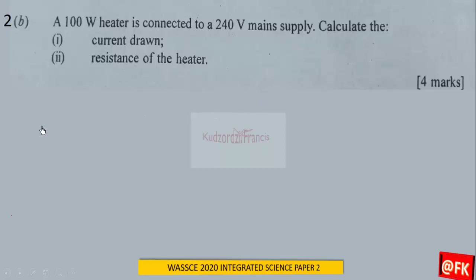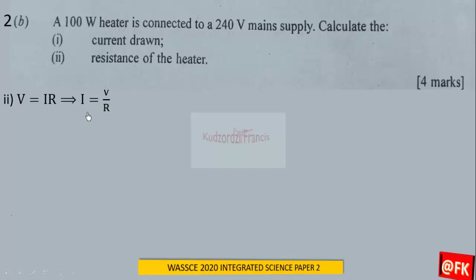From Ohm's law, V = IR, which implies I = V/R by dividing both sides by R. Also, P = IV, so substituting V/R in place of I, we get P = (V/R) × V.